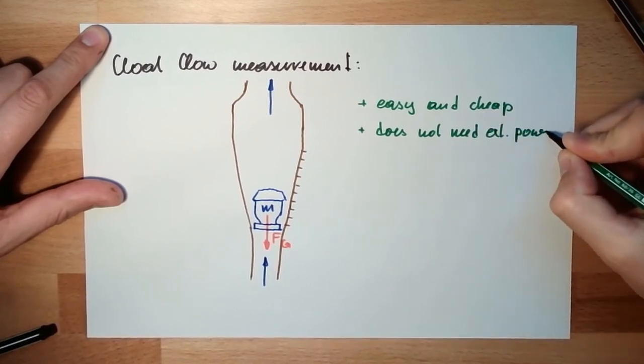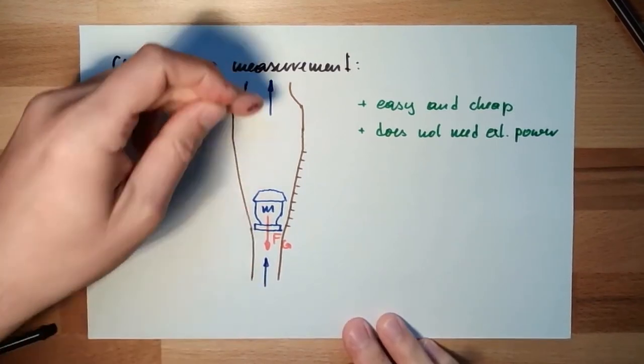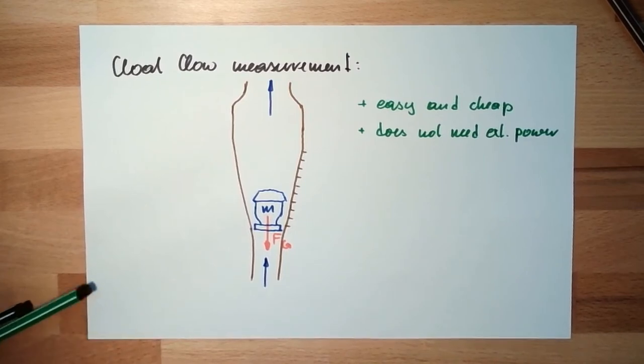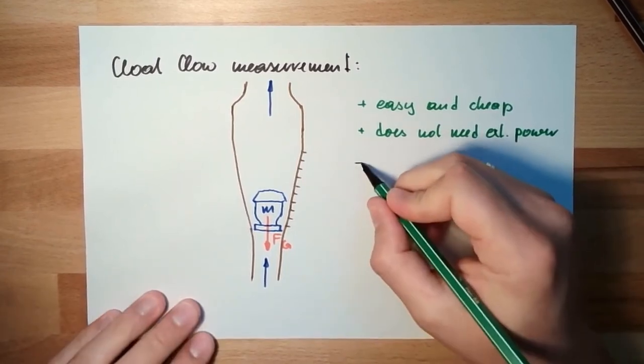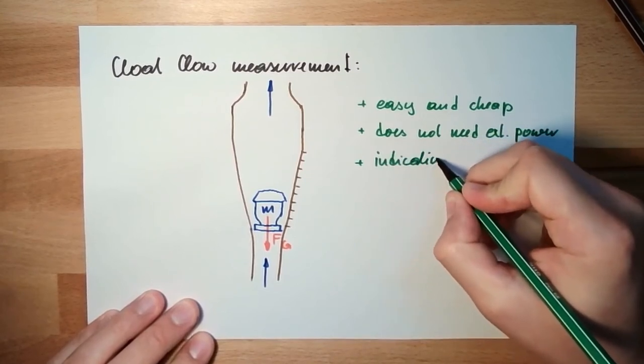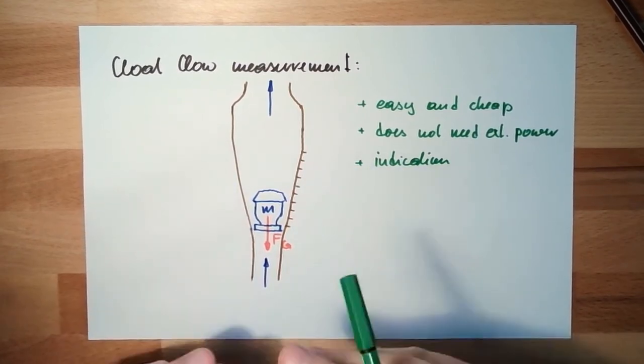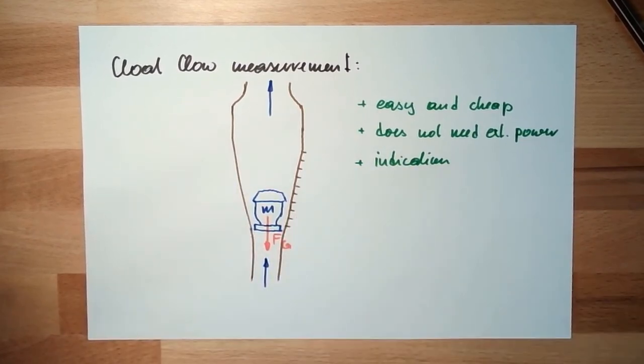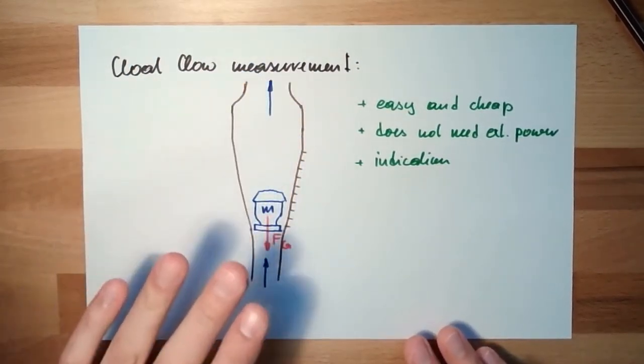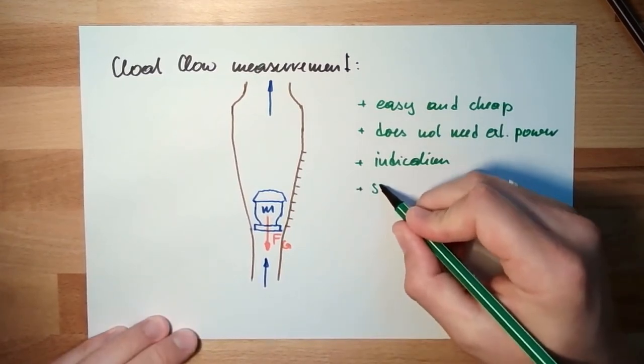Of course we have again a pressure drop, that's a disadvantage. But we have on-spot indication already built in. It's not influenced by conductivity, and also works for small flows.